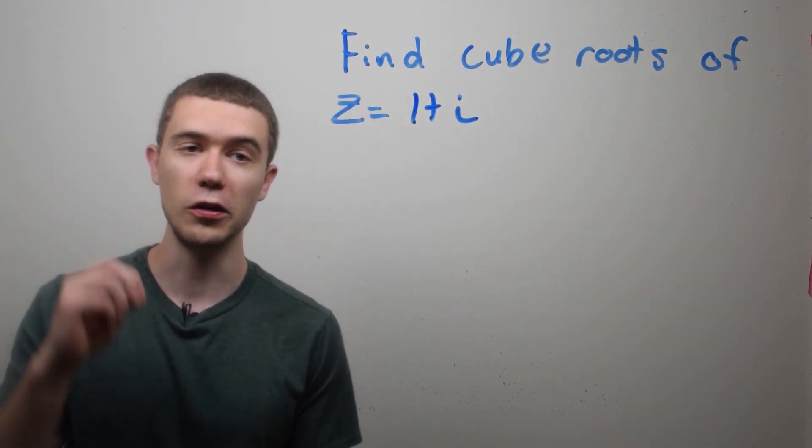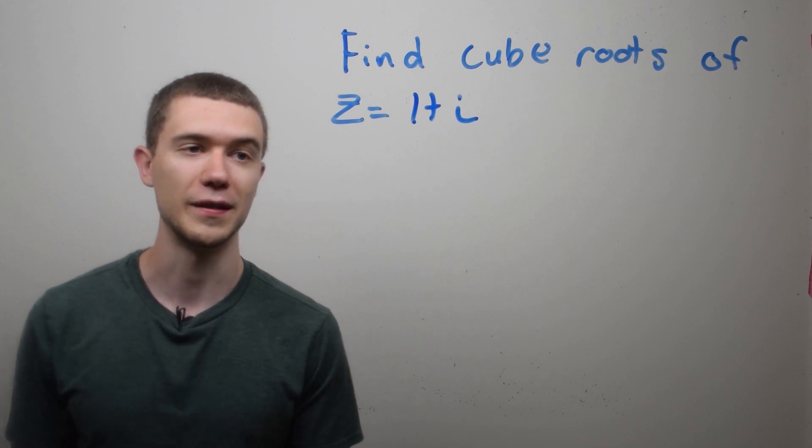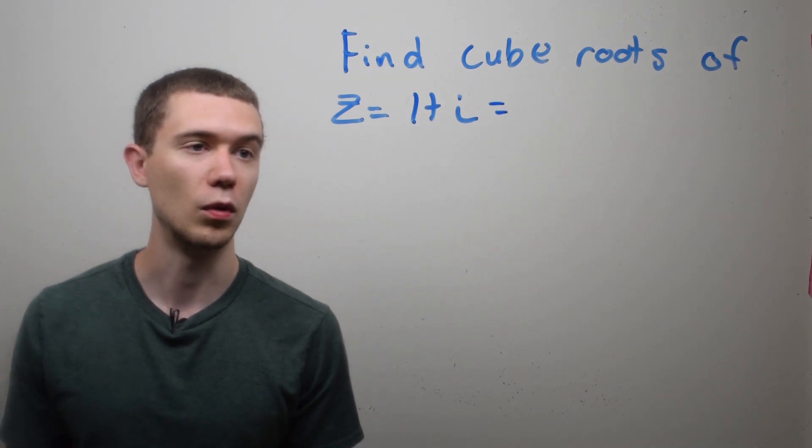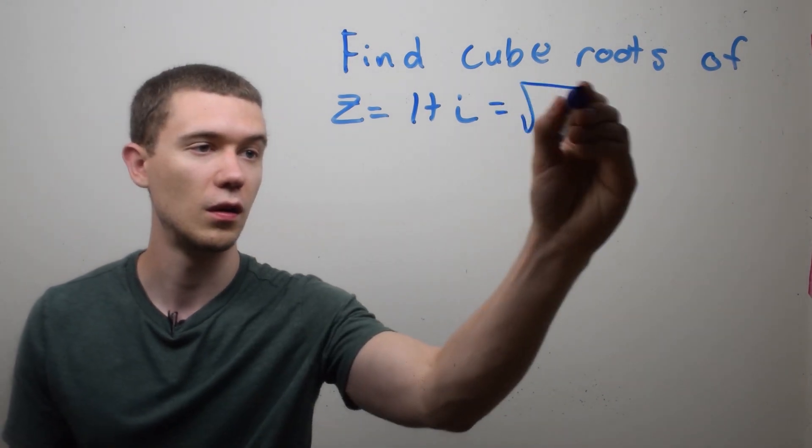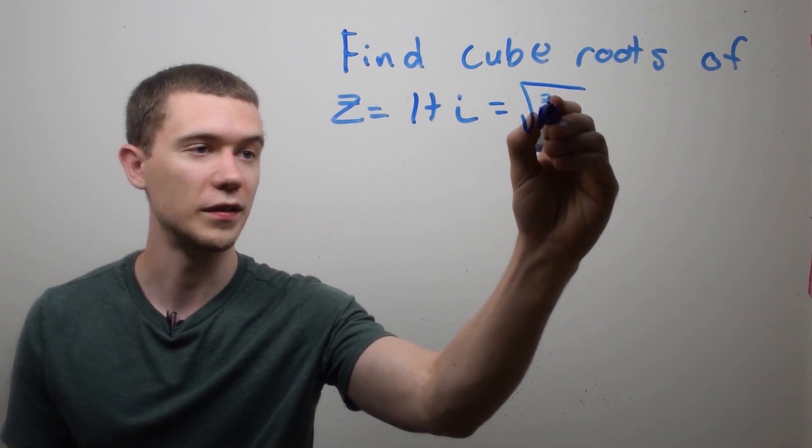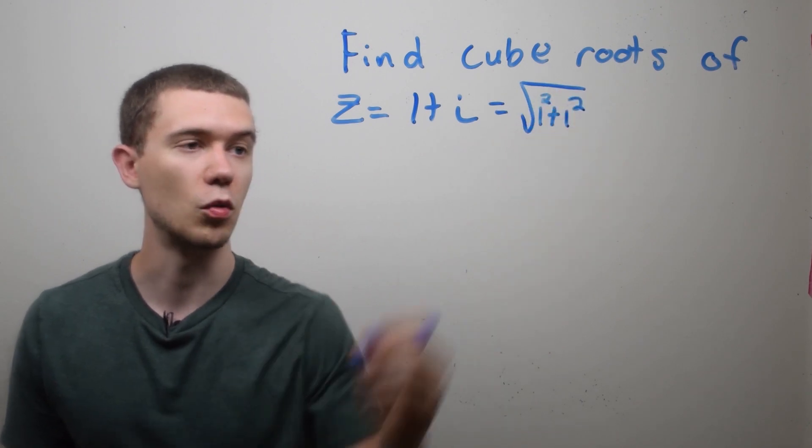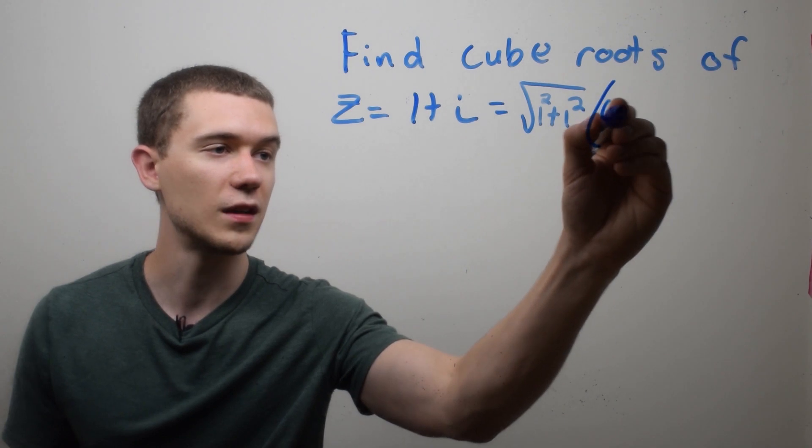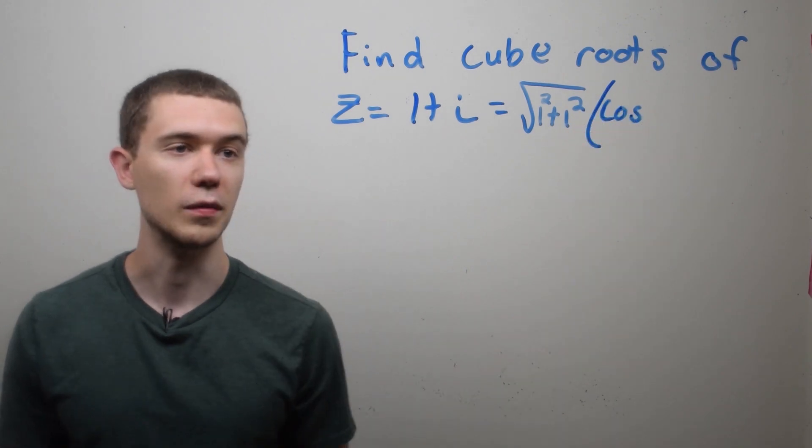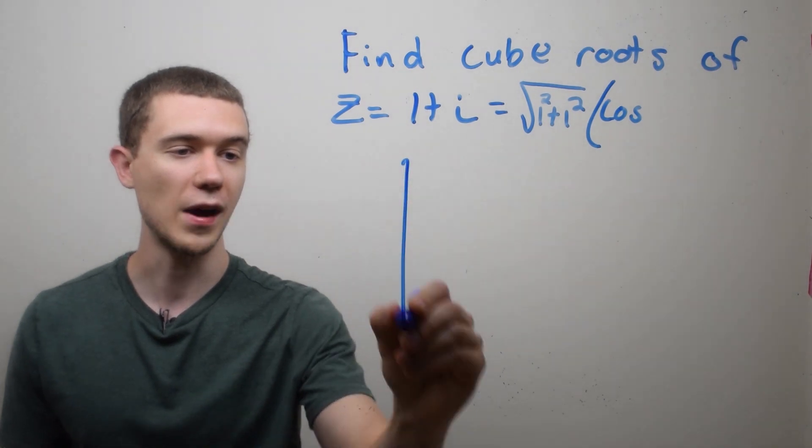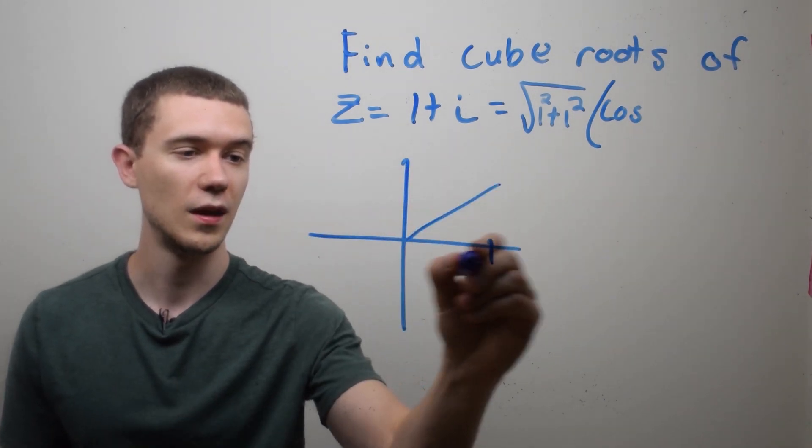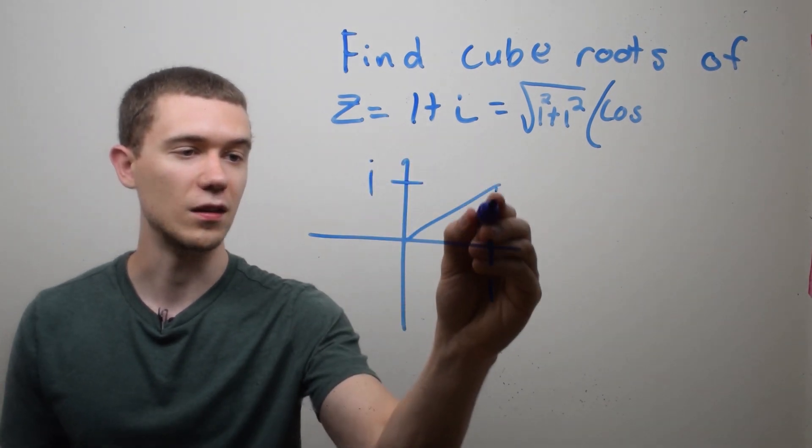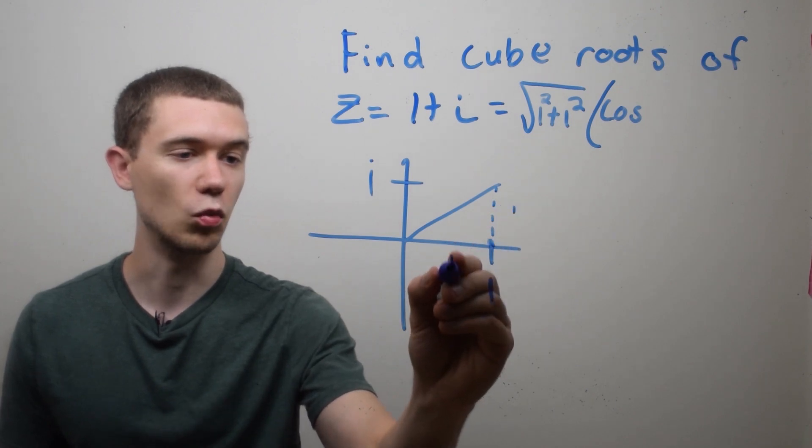In this example, I want to find all the cube roots of z equals 1 plus i. So first we need to write this in its polar form, which is equal to the modulus of 1 plus i. That's the square root of the 1 squared plus the 1 squared from the i. Remember it's the real part squared plus the imaginary part squared times the cosine of the argument of this. And if you don't remember how to do that, you can always plot this number.